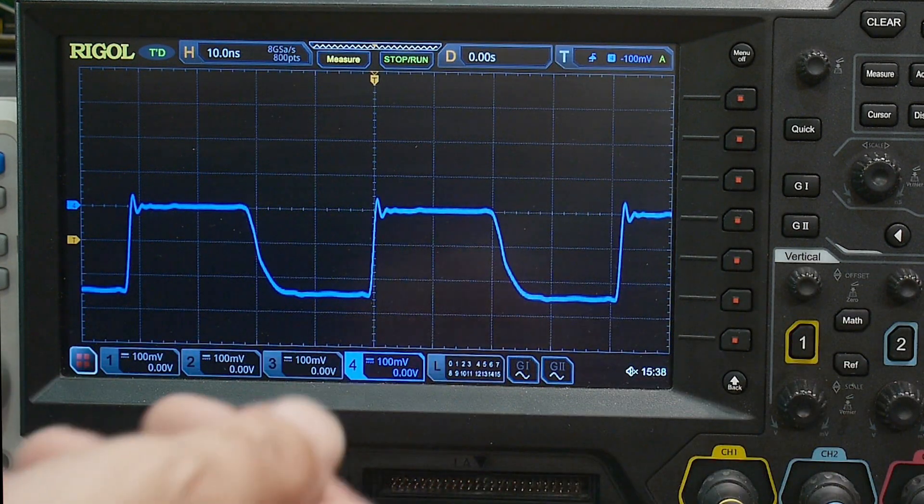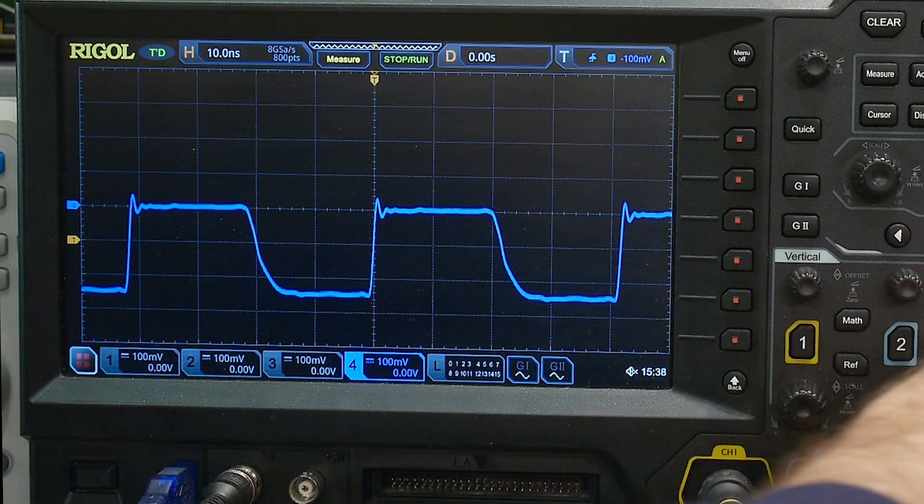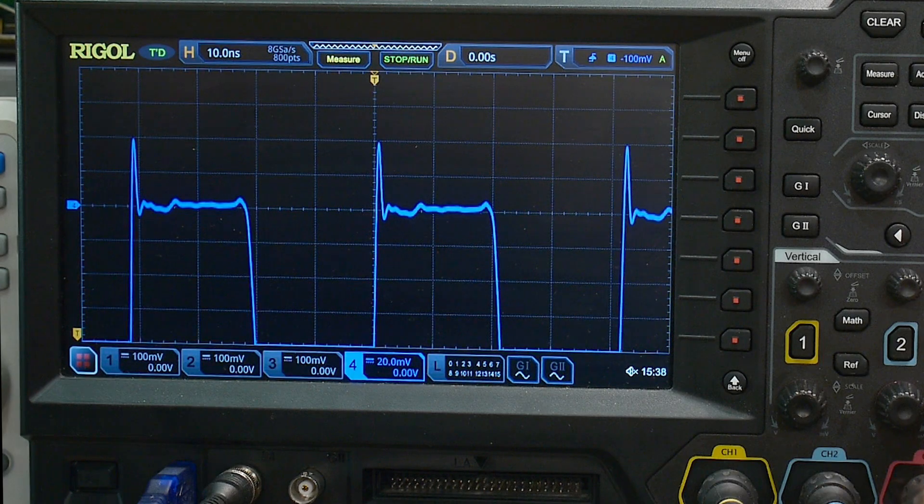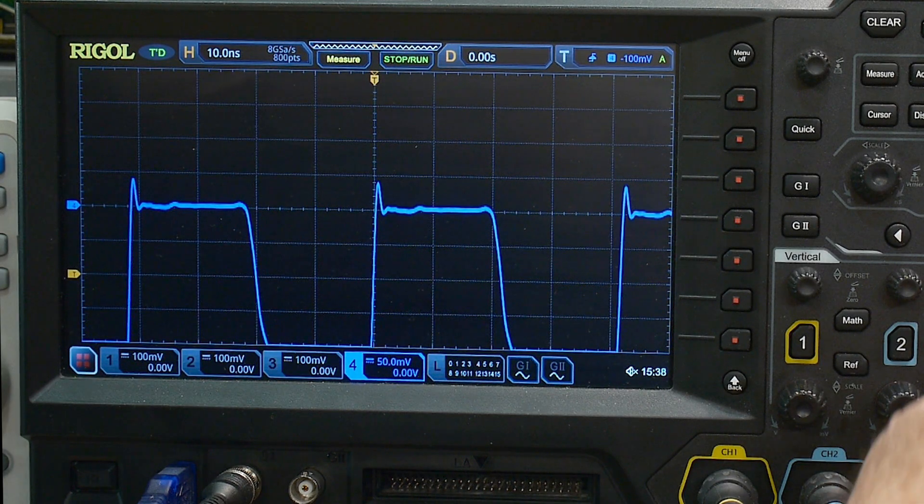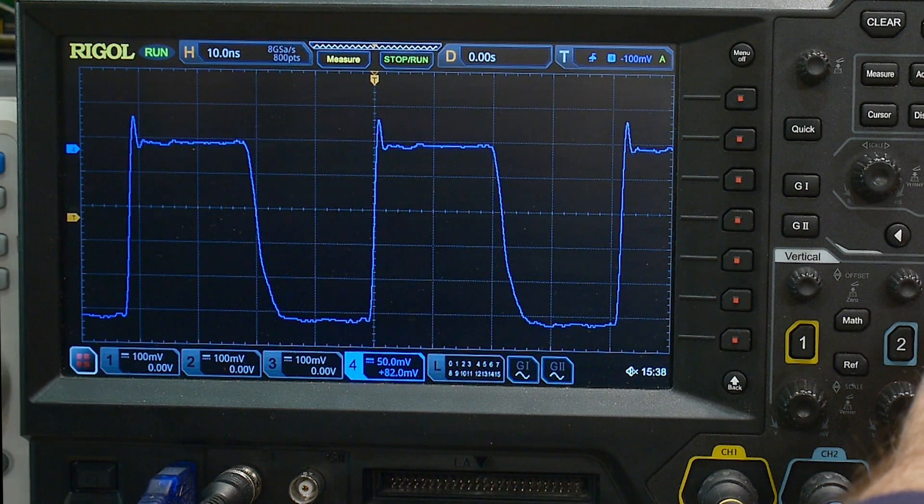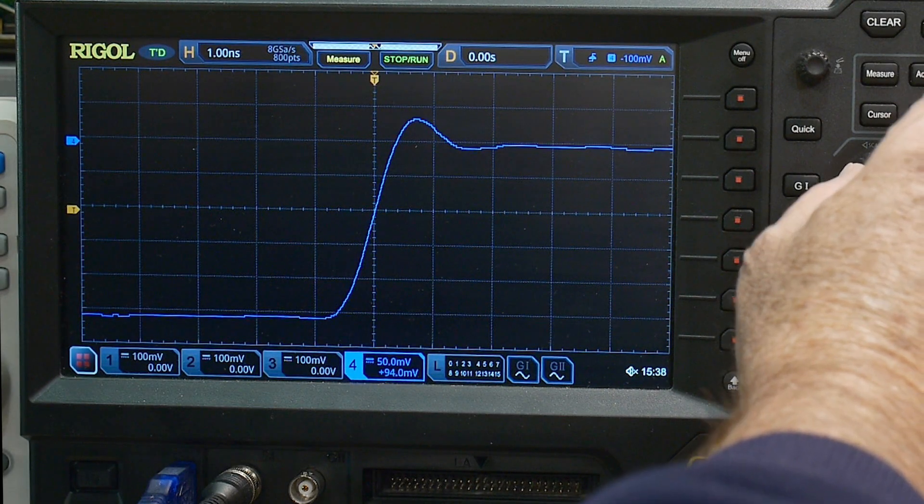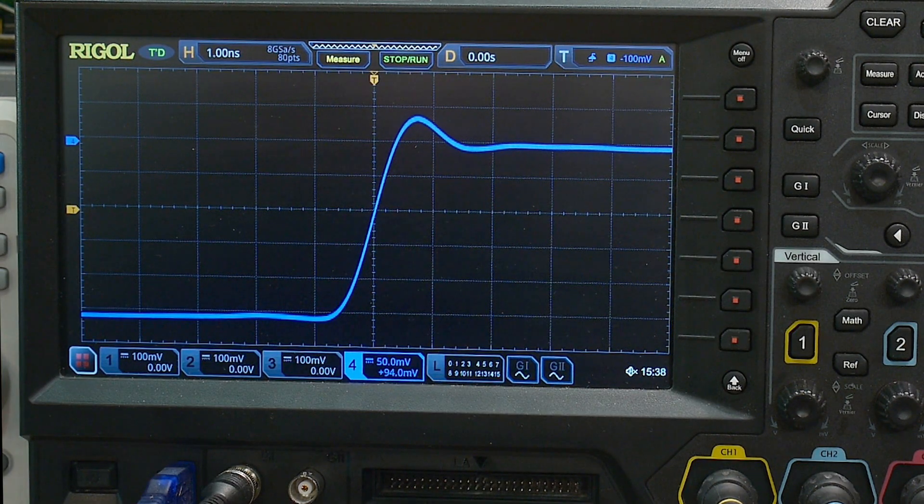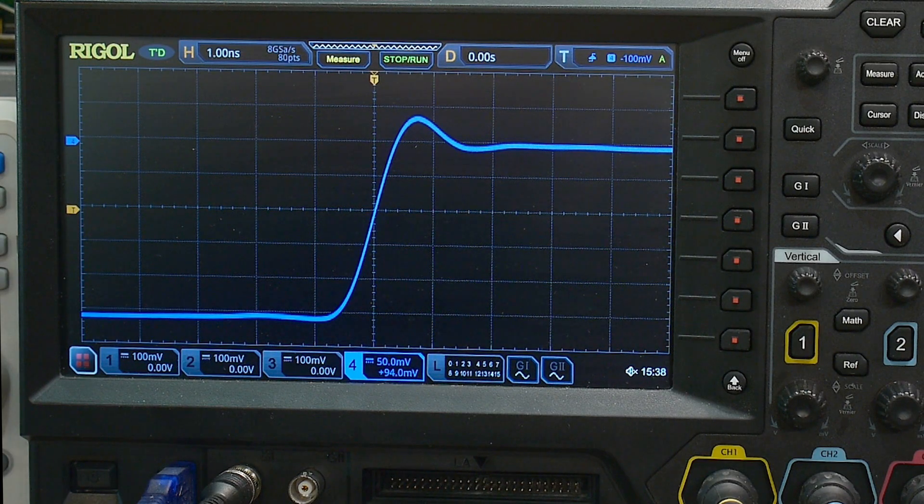Let's get it nice and big to make the measurement easier. We will then zoom in on that edge. So that's as fast as my oscilloscope can go, one nanosecond per division. It looks like it's less than a division, but might as well use your measurement tools.